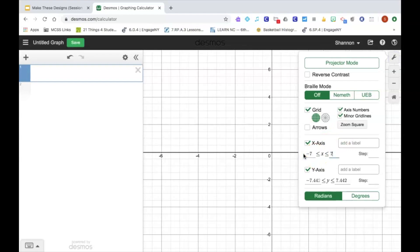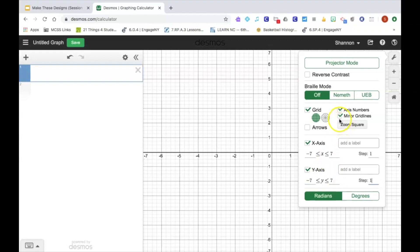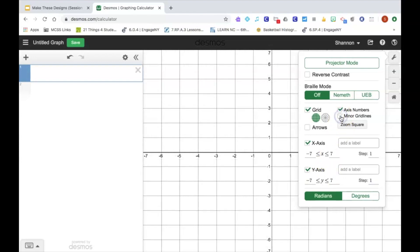I'm going to change this to negative 7 to positive 7 with a step of 1, and then do the same on the y-axis with a step of 1. And then I'm going to click off of this Minor Gridlines.